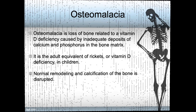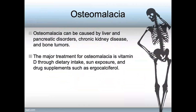Besides the primary source of nutrition, there are secondary sources for osteomalacia. These include liver and pancreatic disorders, chronic kidney disease, and bone tumors. The major treatment for osteomalacia is vitamin D through dietary intake, exposure to the sun, and drug supplements such as ergocalciferol.